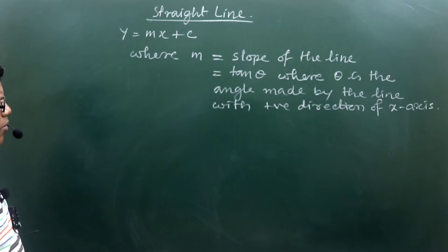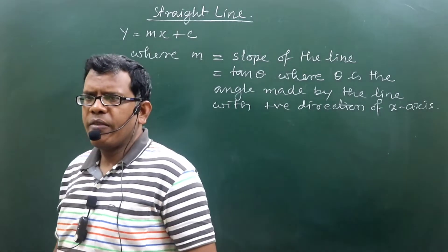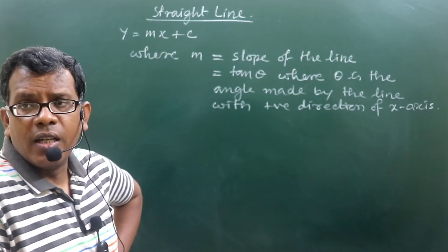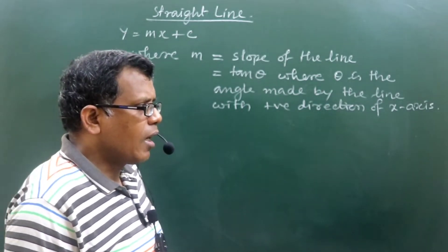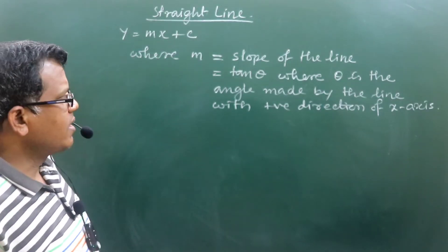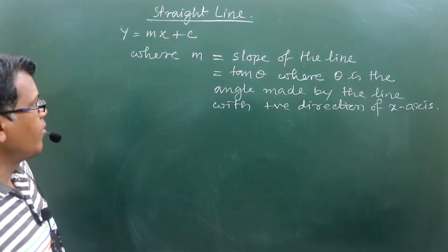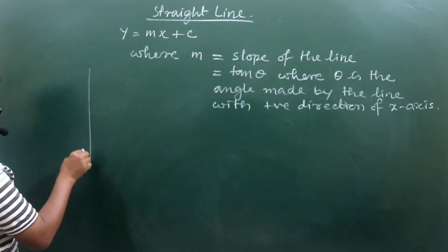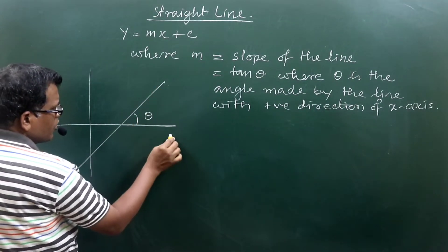Can we understand the slope of a straight line with this statement? Whenever we draw a line on the x-y plane, the line is found to make some angle with the positive x-direction. Once we know how much angle the line makes with the positive direction of the x-axis, the numerical value of tan of that angle tells us the slope of the line. If we draw a line like this on the x-y plane, this is the geometrical position of theta.